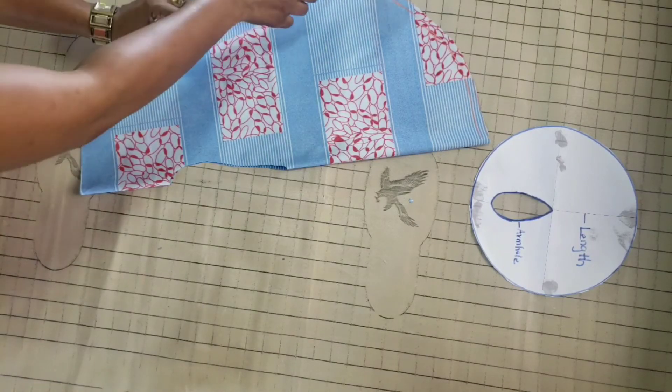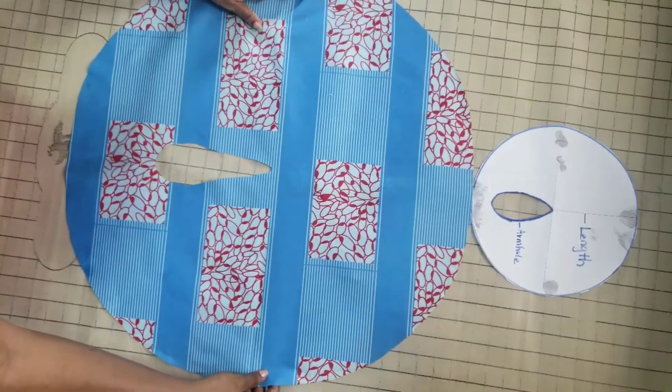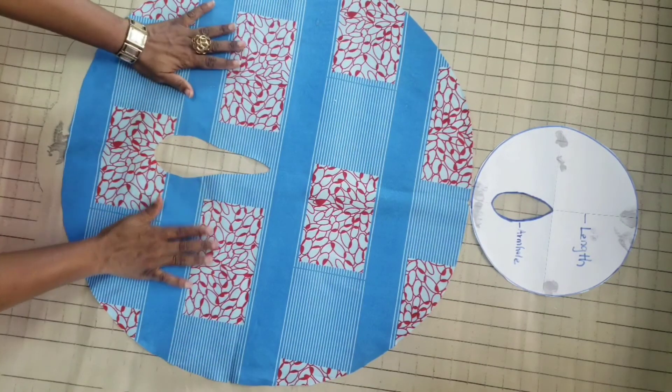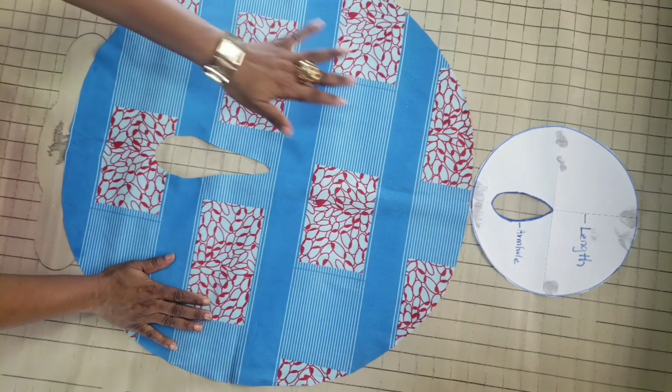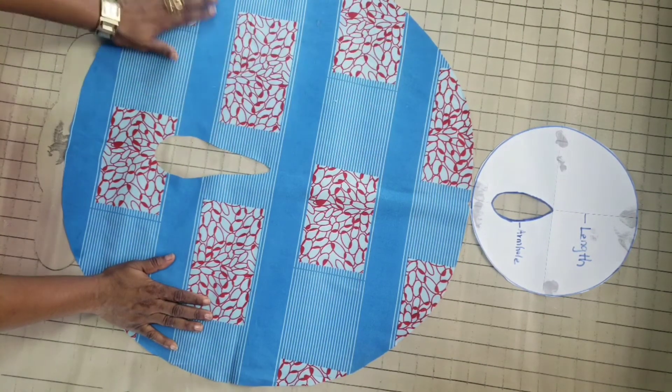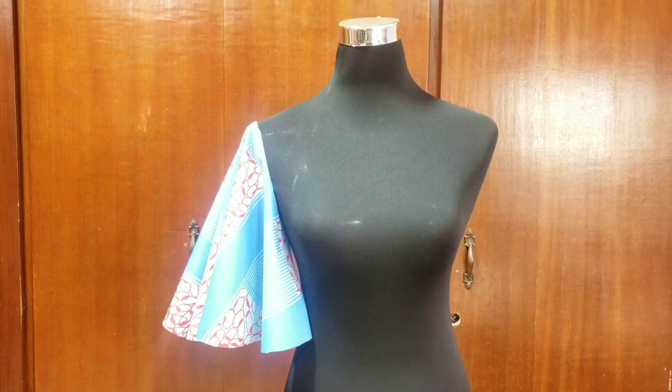I will just open up now so that you can see what it looks like. This is what I got, looking just like the pattern I did on the paper. This is my sleeve armhole.